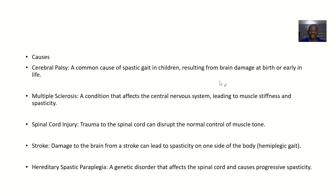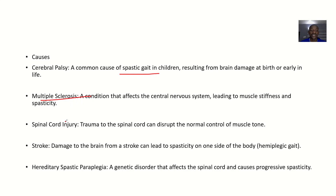Causes include cerebral palsy, a common cause of spastic gait in children, usually resulting from brain damage at birth or early in life. Multiple sclerosis is a condition affecting the central nervous system leading to muscle stiffness and spasticity. Spinal cord injury — trauma to the spinal cord can disrupt the normal control of muscle tone. Stroke — brain damage resulting from a stroke can lead to spasticity.